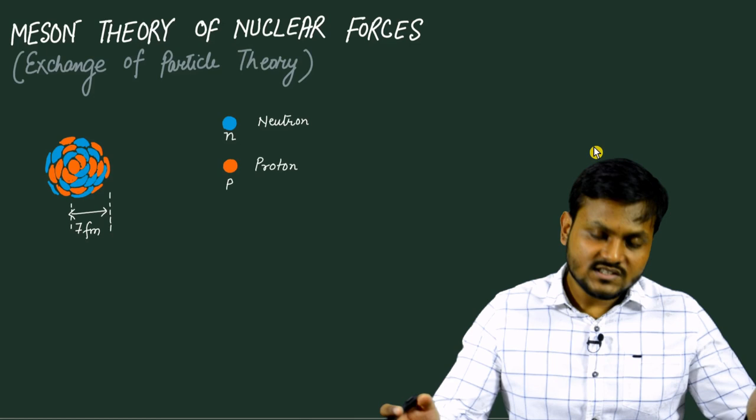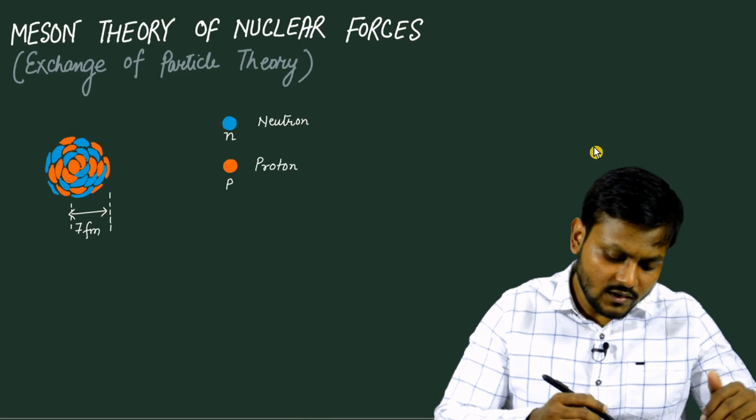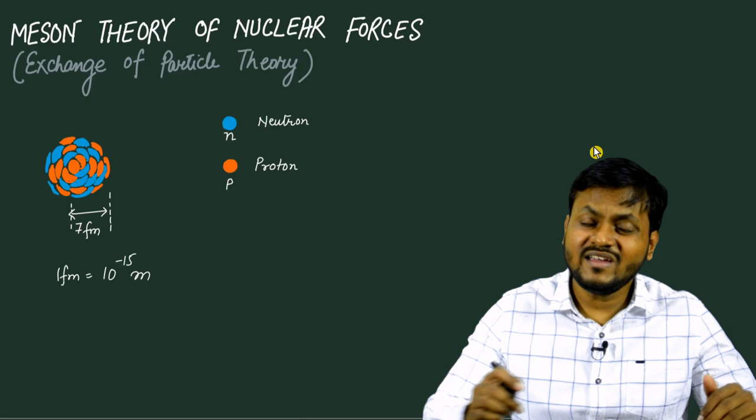The nucleus is usually very very small. Even the largest nucleus has a radius of around 7 femtometers, where one femtometer is of the order of 10 to the power minus 15 meters, which is a very very tiny space.